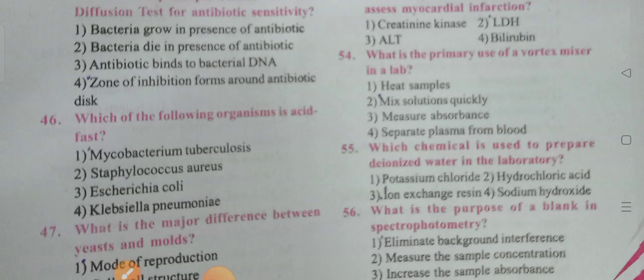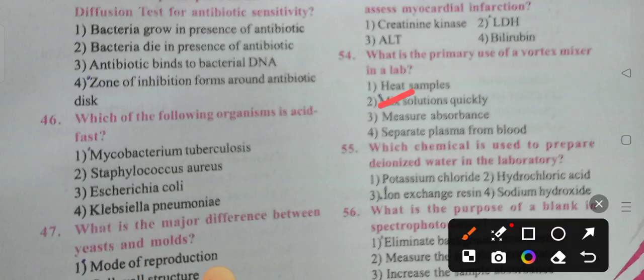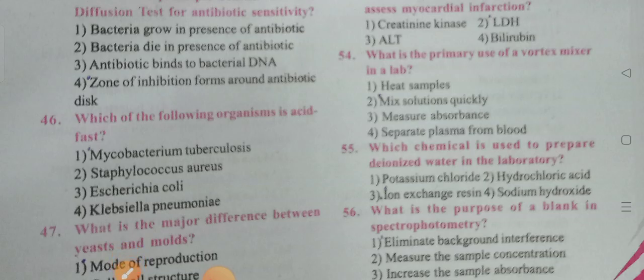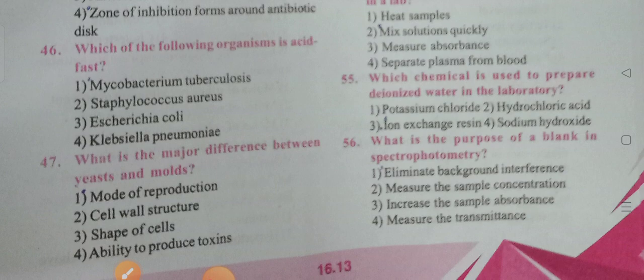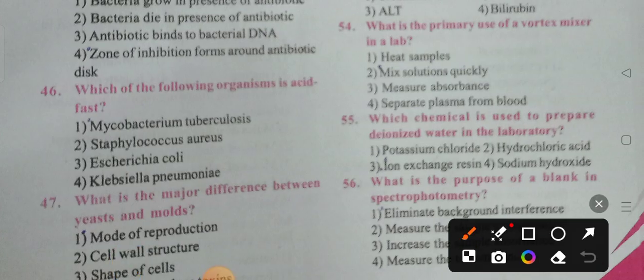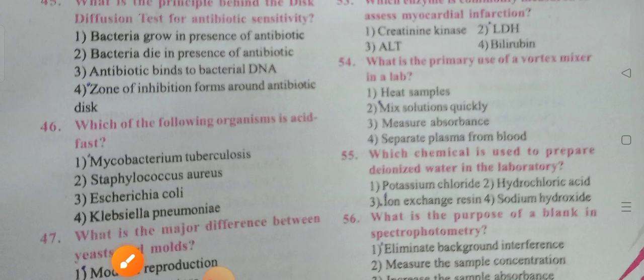What is the primary use of a vortex mixer in a lab? It is used to mix solutions quickly. Which chemical is used to prepare deionized water in the laboratory? Options: potassium chloride, hydrochloric acid, ion exchange resin, sodium hydroxide. Option 3 is the correct answer — ion exchange resin.